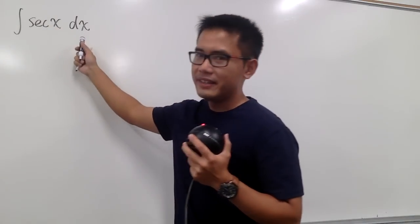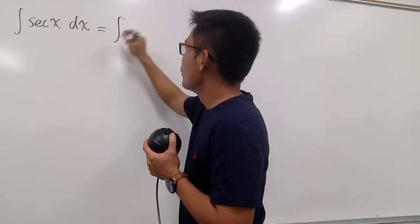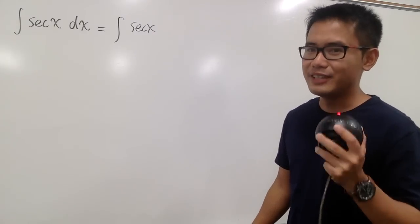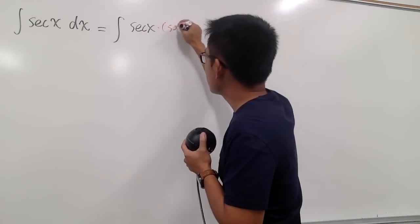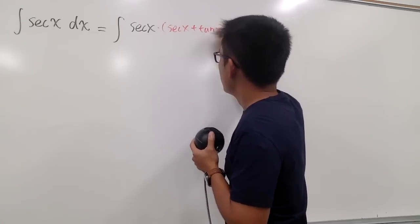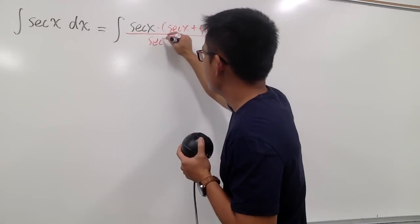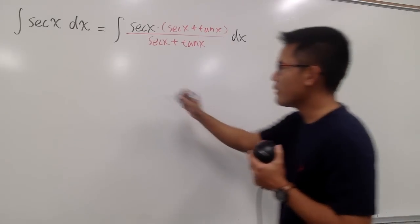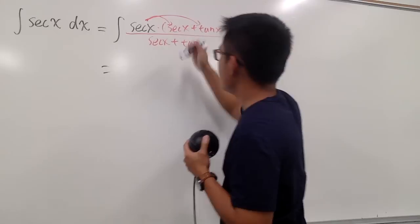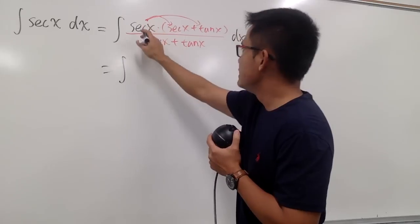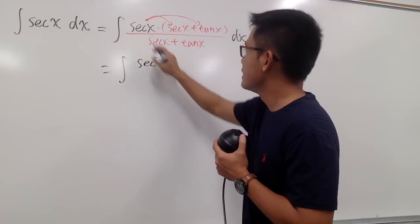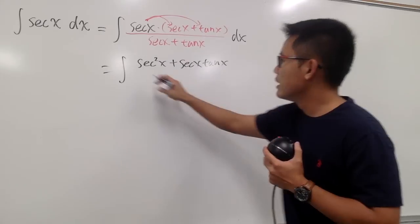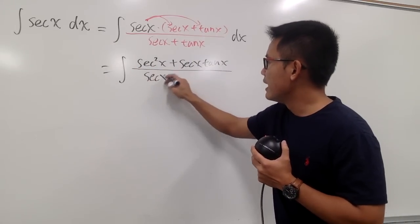To integrate secant x, this is the standard result. What we do first is keep the secant x right here, and we will multiply the top and bottom by secant x plus tangent x. So we multiply the top by secant x plus tangent x and divide by secant x plus tangent x. You may be wondering what good does this do. Well, if you distribute the secant x into the parentheses, you will see that the numerator becomes secant squared x plus secant x tangent x.